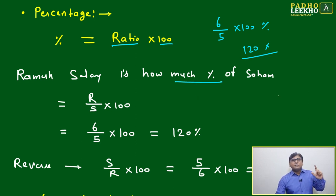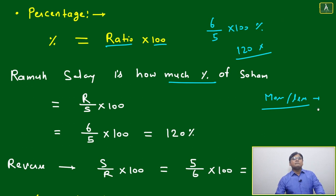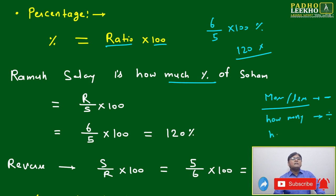Now which term we have seen? We have seen more, less. Not in percentage, absolute number. What we have done? We have done the subtraction. We have seen many times, how many times - we have done the division. Now we are looking at how much percentage.